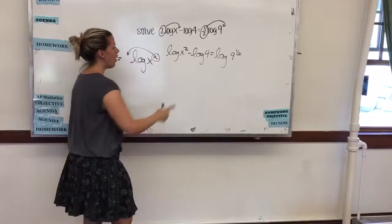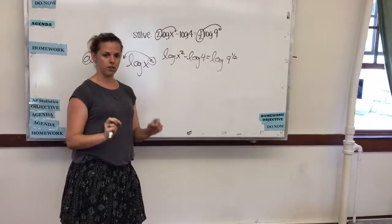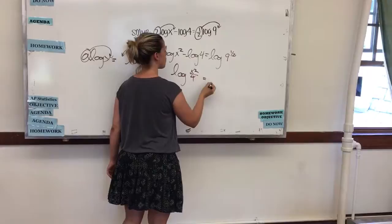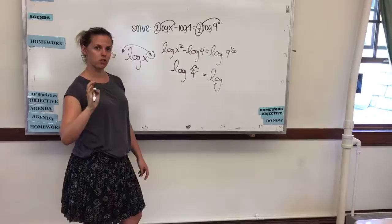Now, the difference of two logs is log of a quotient. So log of x squared over 4 equals log. And now think about 9 to the 1 half. 1 half is a root, so 3.